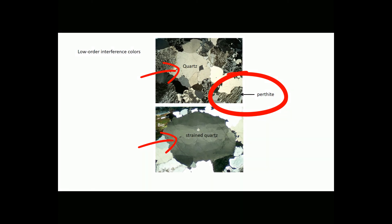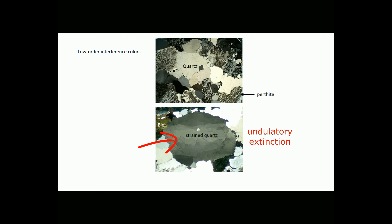Perthite displays a wormy texture due to exsolution, which produced parallel zones with slightly different optical properties. Note that the quartz grain, especially apparent in the bottom view, has patchy or blobby interference colors. This is typical for quartz and helps identify it. If you rotate the grain, different parts of the grain will go extinct at slightly different angles — this is called undulatory extinction, and quartz is one of a few minerals that show it commonly. On the left-hand side in the bottom photo, there is one flake of biotite showing higher-order, middle-order interference colors compared to the quartz and feldspars.